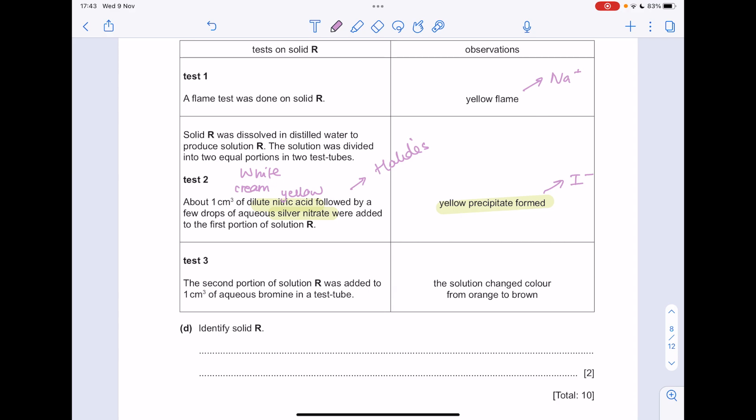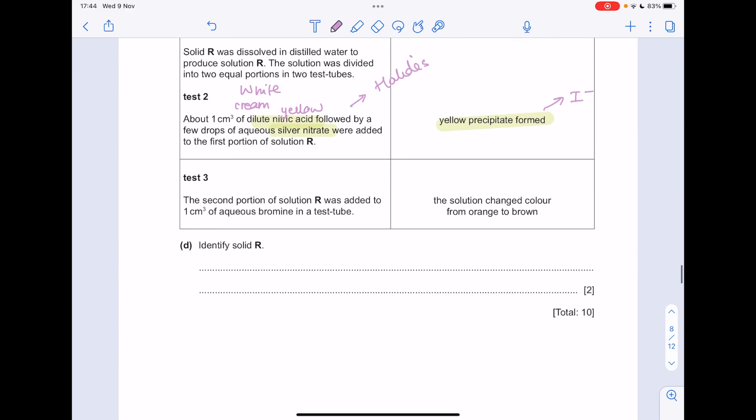Test 3, the second portion of solution R was added to one centimetres cubed of aqueous bromine. Solution changed colour from orange to brown. This is a displacement reaction, just proving that the bromine is more reactive than the iodine. So again, making us think that we have iodide ions. So what is solid R? Sodium iodide.